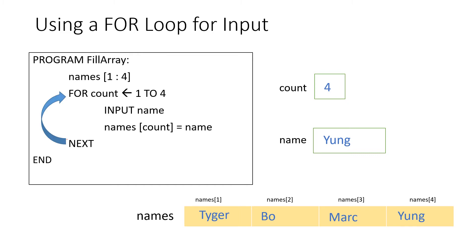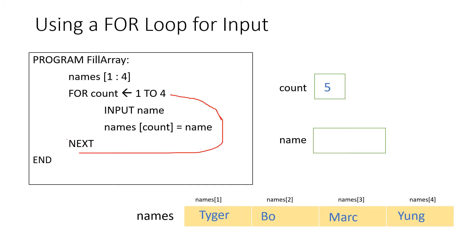When we see next, we go back to the top of the for loop. Count becomes 5, but at this stage the counter has been overshot, so the pseudocode continues from under the next command and the loop stops.